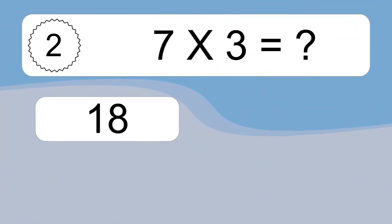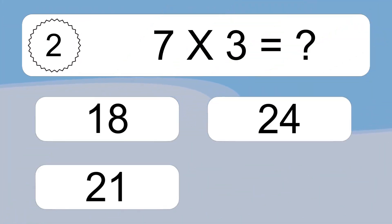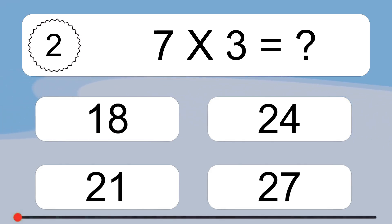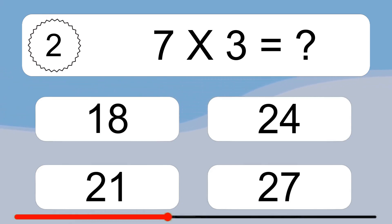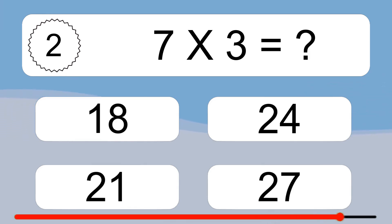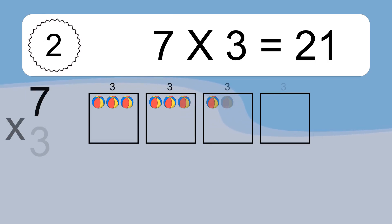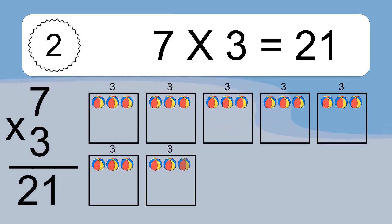7 times 3 equals what? 7 times 3 equals 21.